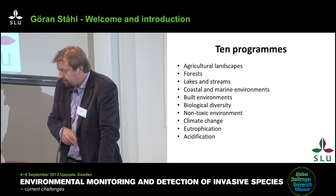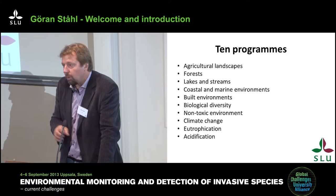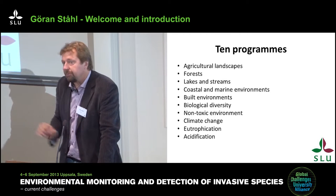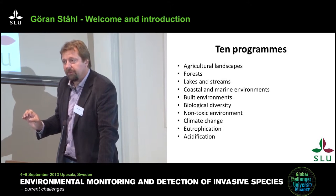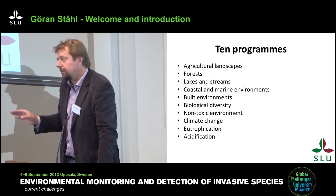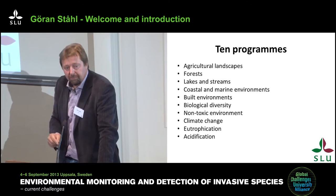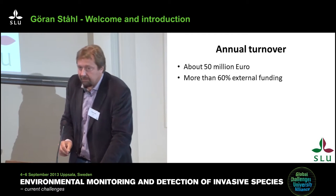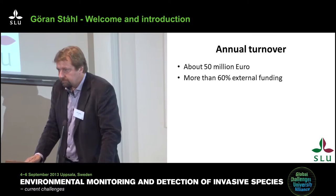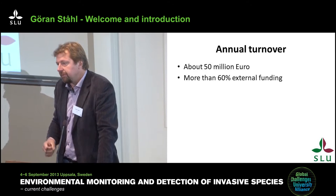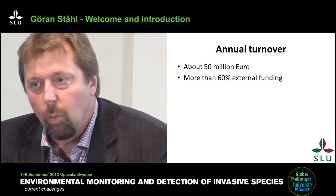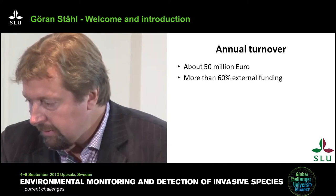We have ten programs linked to the national environmental quality targets in Sweden, run in a type of matrix organization so all faculties and departments with activities in a certain field can participate. The annual turnover is roughly 50 million euros, with more than 60% external funding — mainly from Swedish agencies that need a quality partner to carry out monitoring.